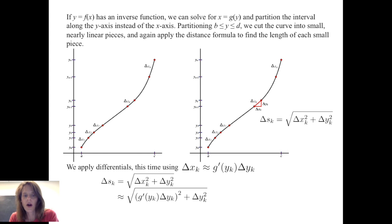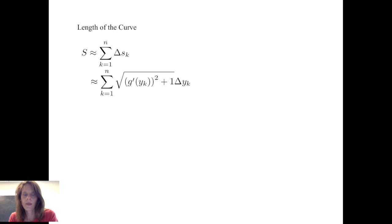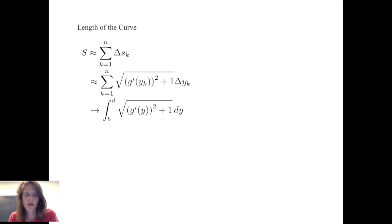Making that substitution into the formula for Δs_k, we get Δs_k ≈ √([g′(y_k) · Δy_k]² + Δy_k²). Again, we factor out the Δy_k², take its square root, and get Δs_k ≈ √([g′(y_k)]² + 1) · Δy_k. Therefore, the length of the curve s is approximated by the Riemann sum from k = 1 to n of √([g′(y_k)]² + 1) · Δy_k. Letting the norm of the partition go to zero, the Riemann sum converges to the definite integral from b to d of √([g′(y)]² + 1) dy.